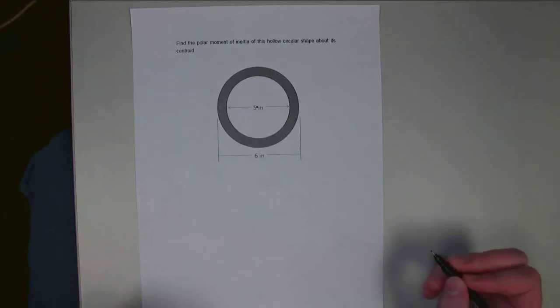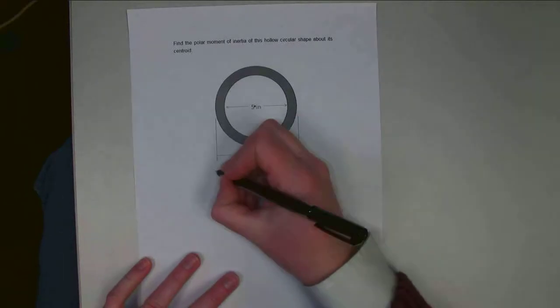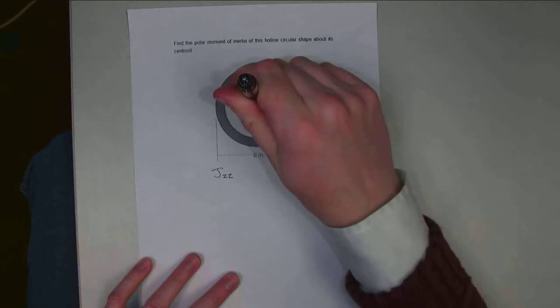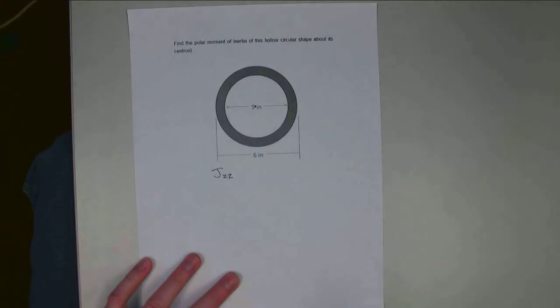So with this, I'm going to say Jzz, my polar moment of inertia about the z-axis. It's going to be straight out of the page like this.